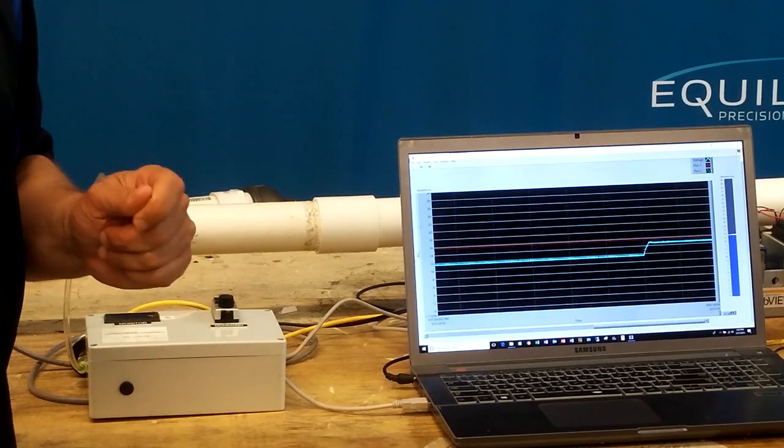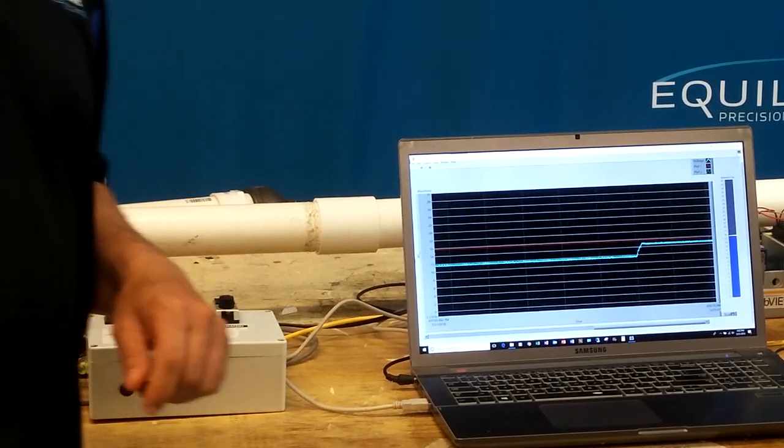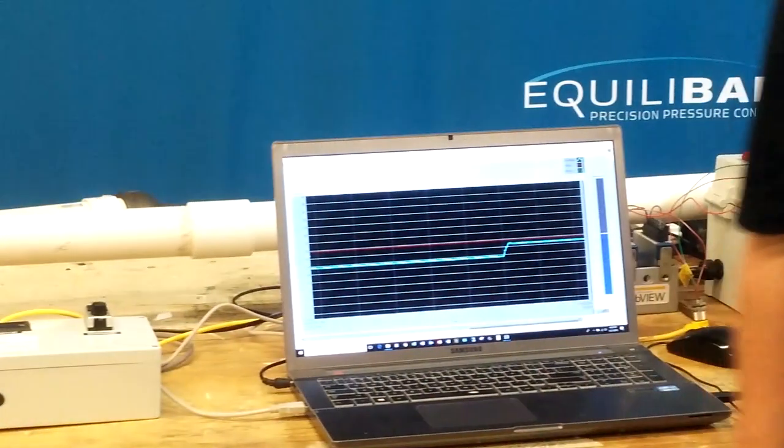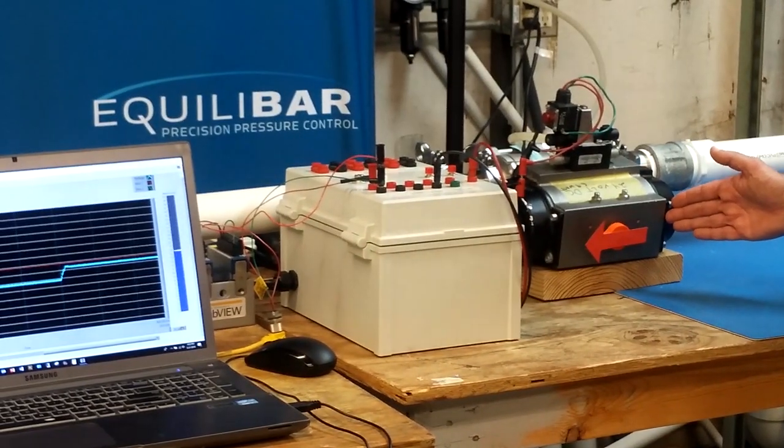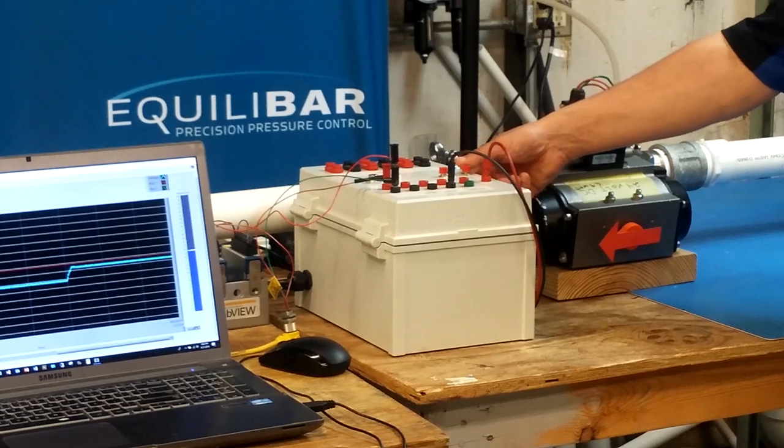Now let's take a look and see how quickly it will respond to a change in flow. To do that, we're going to modulate this on-off valve. So we'll modulate it two or three times here.